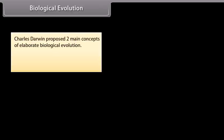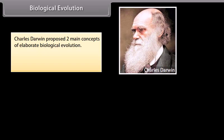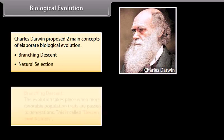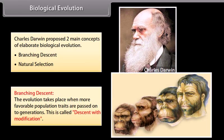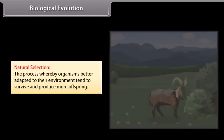Charles Darwin proposed two main concepts of biological evolution: 1. Branching descent — the evolution takes place when more favorable population traits are passed on to generations, called descent with modification; and 2. Natural selection — the process whereby organisms better adapted to their environment tend to survive and produce more offspring.